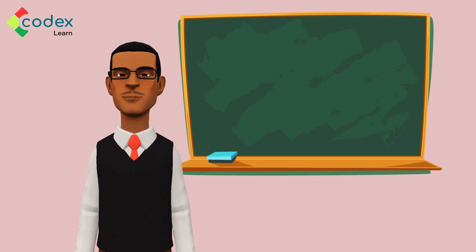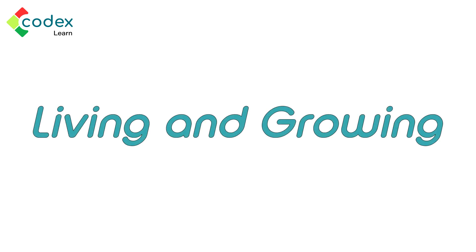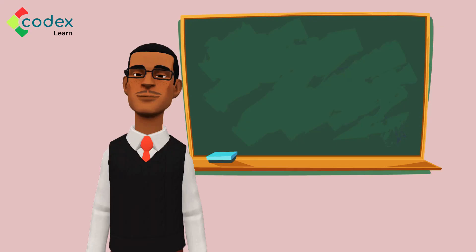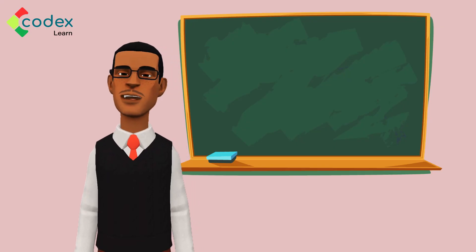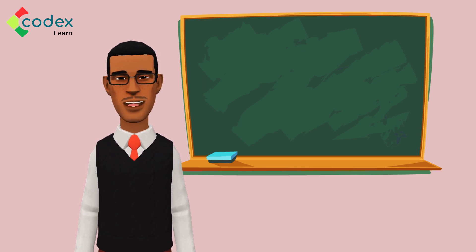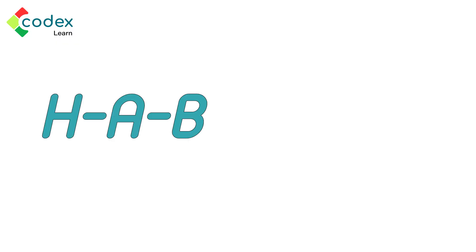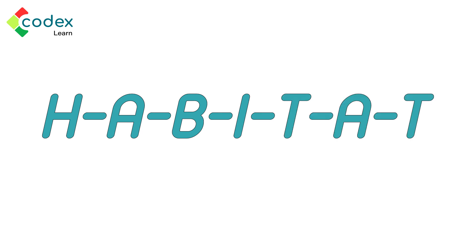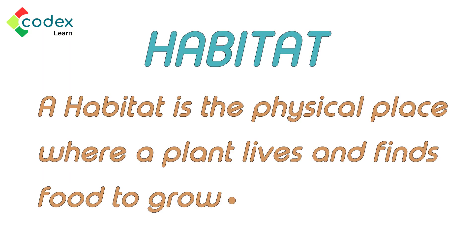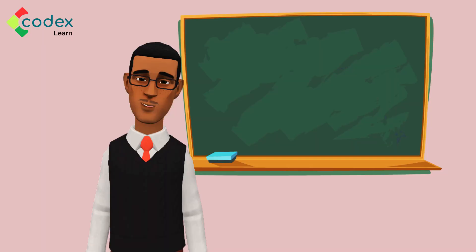Like human beings, plants have a way of living and growing in the different areas they are found. Plants have a special part that allows them to live in a particular place. That place is called a habitat. Let's get the spelling of that word. It goes like this: H-A-B-I-T-A-T. Habitat. So, a habitat is the physical place where a plant lives and finds food to grow.